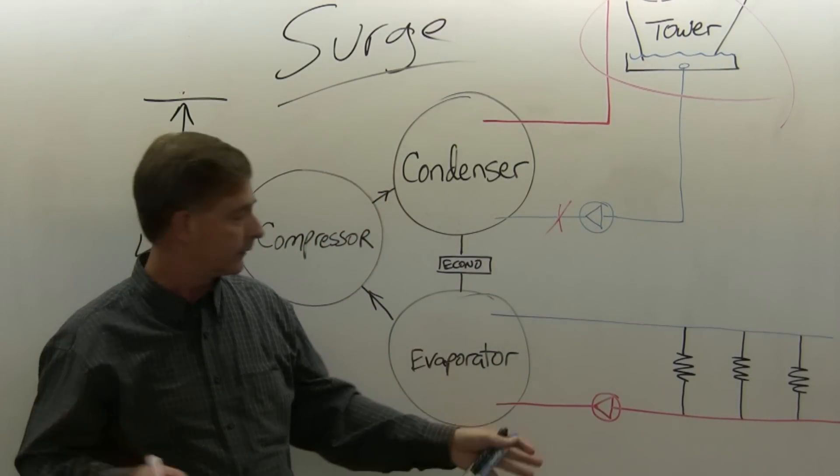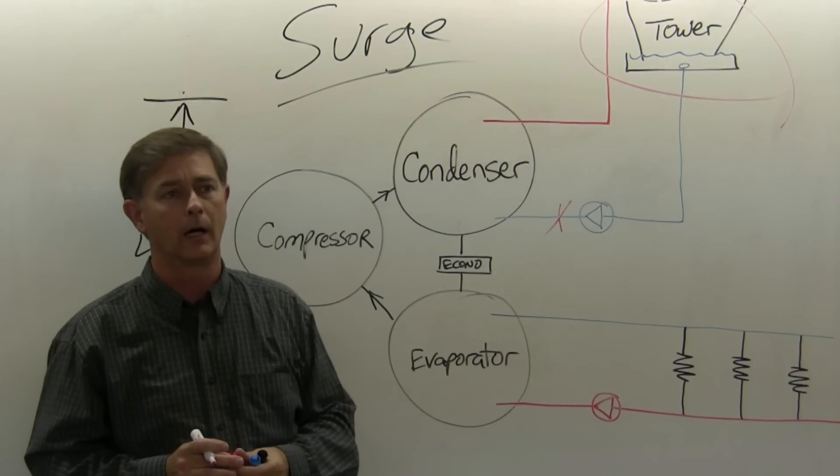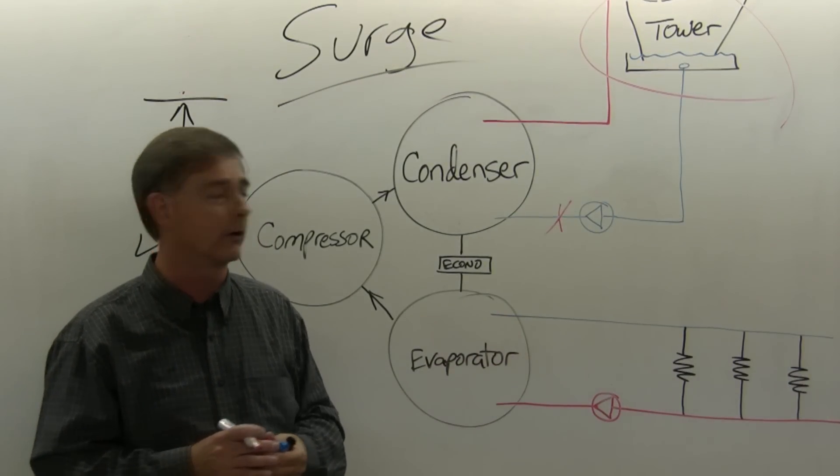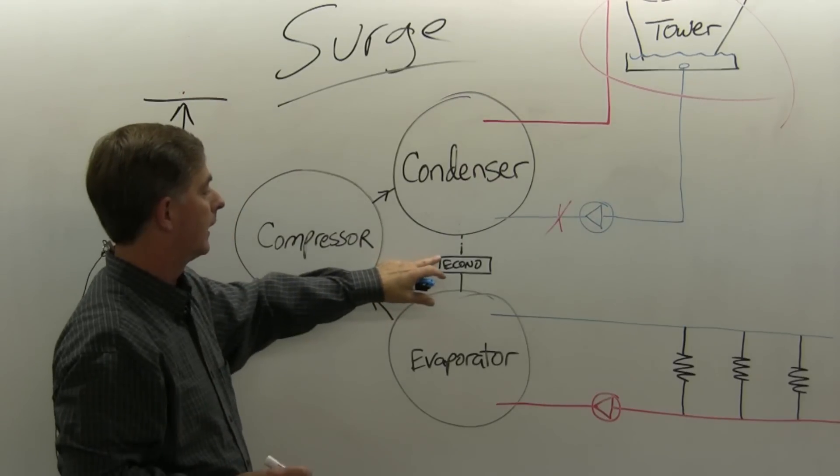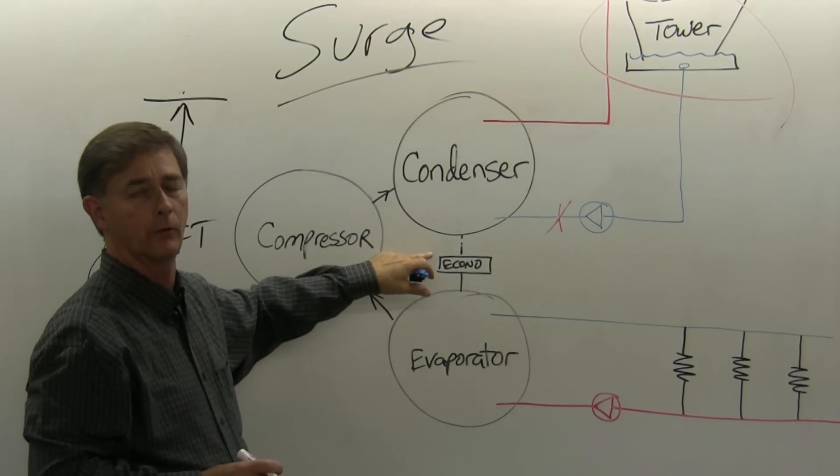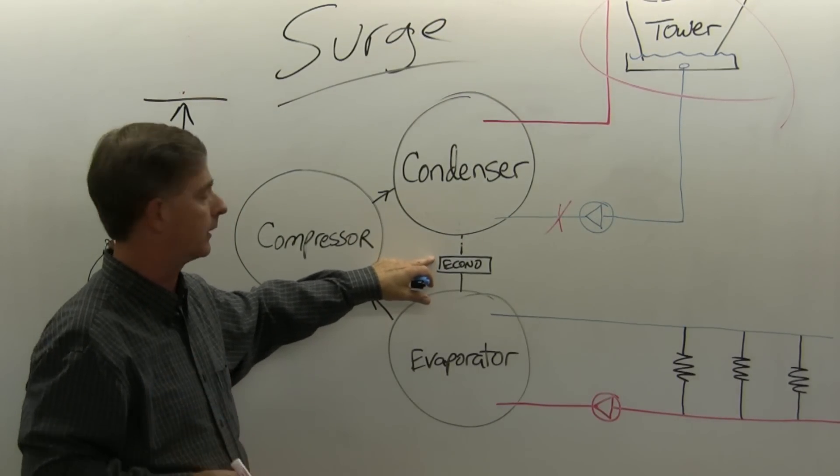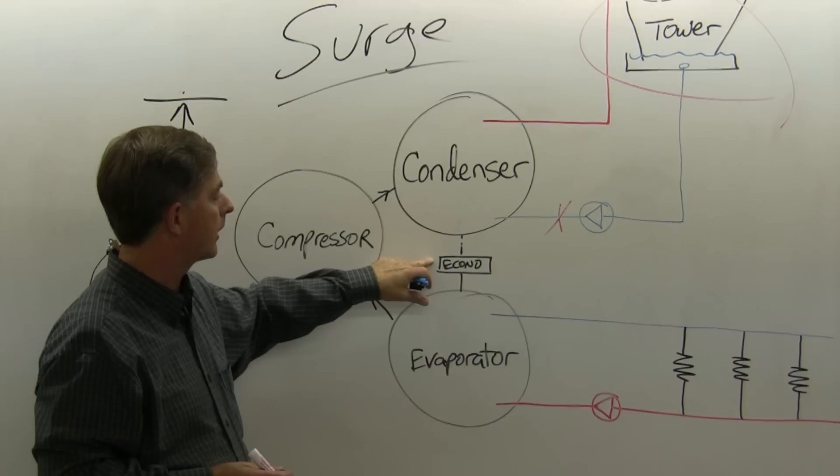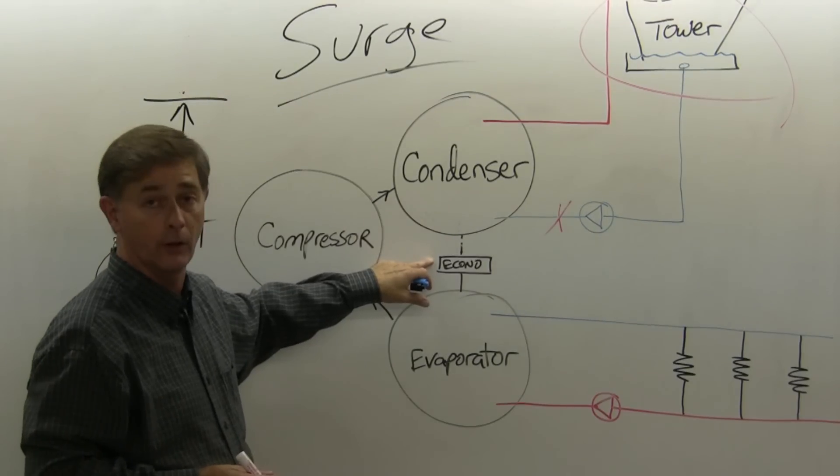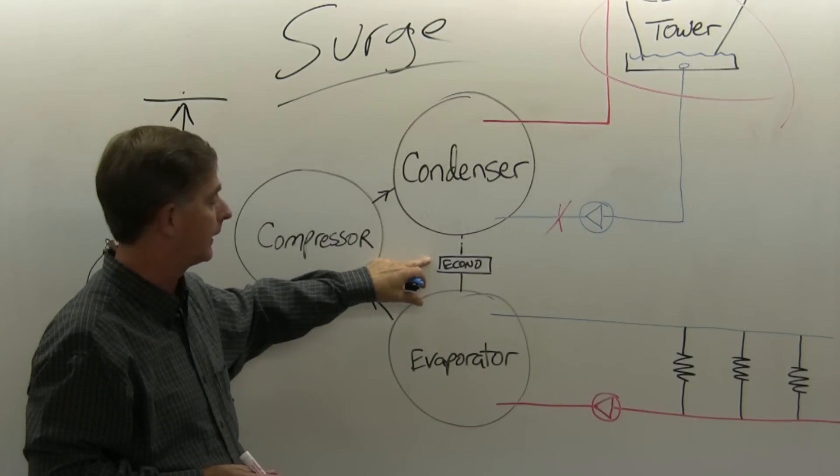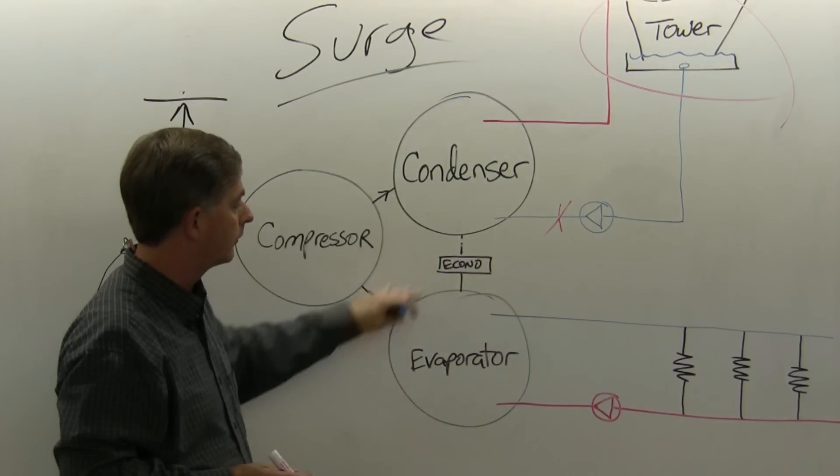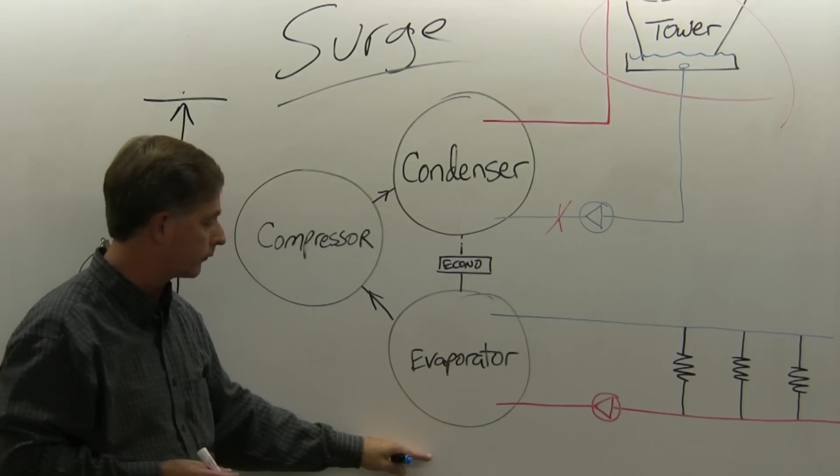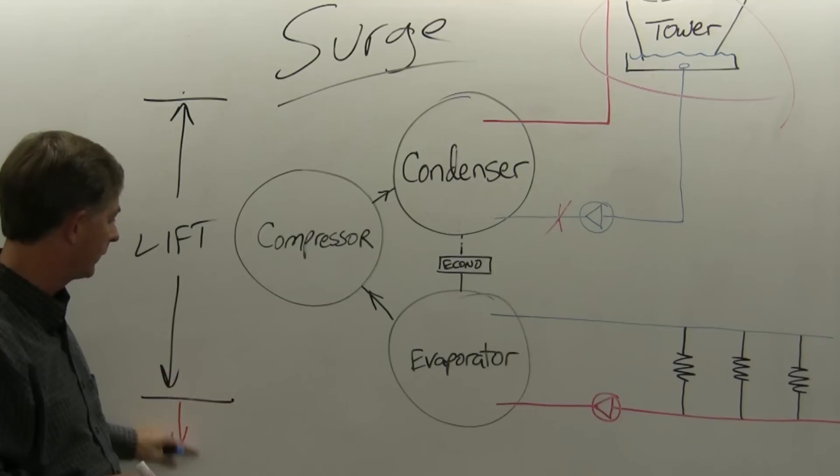You can have a stopped up strainer, low refrigerant charge. You might have a little issue going on if you have an economizer with an orifice that's starting to get contaminated and stopped up. If you have a float, if your machine has a float and it starts sticking, that can also lead to the low side pressure dropping, temperature dropping, and leading to surge.